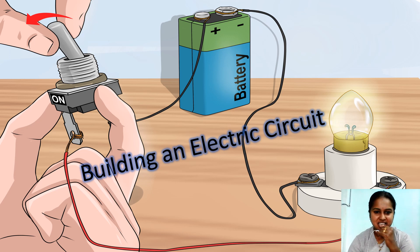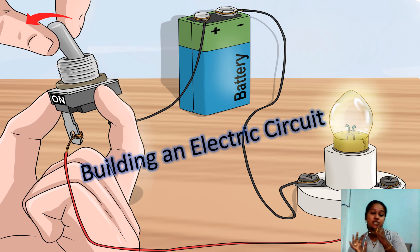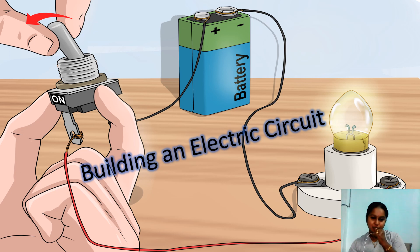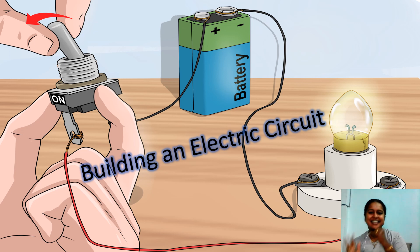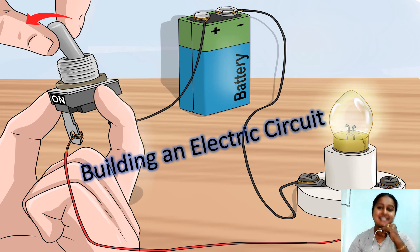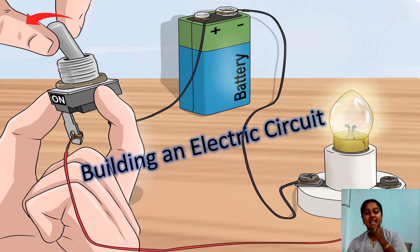Some students want to build an electric circuit. Before building one, make sure you have a dry cell, a bulb, a connecting wire, and a switch. Even without a switch it can still work — no problem. Make sure you have the connecting wire because it connects all the electrical components to each other properly, which allows the current to flow through it.